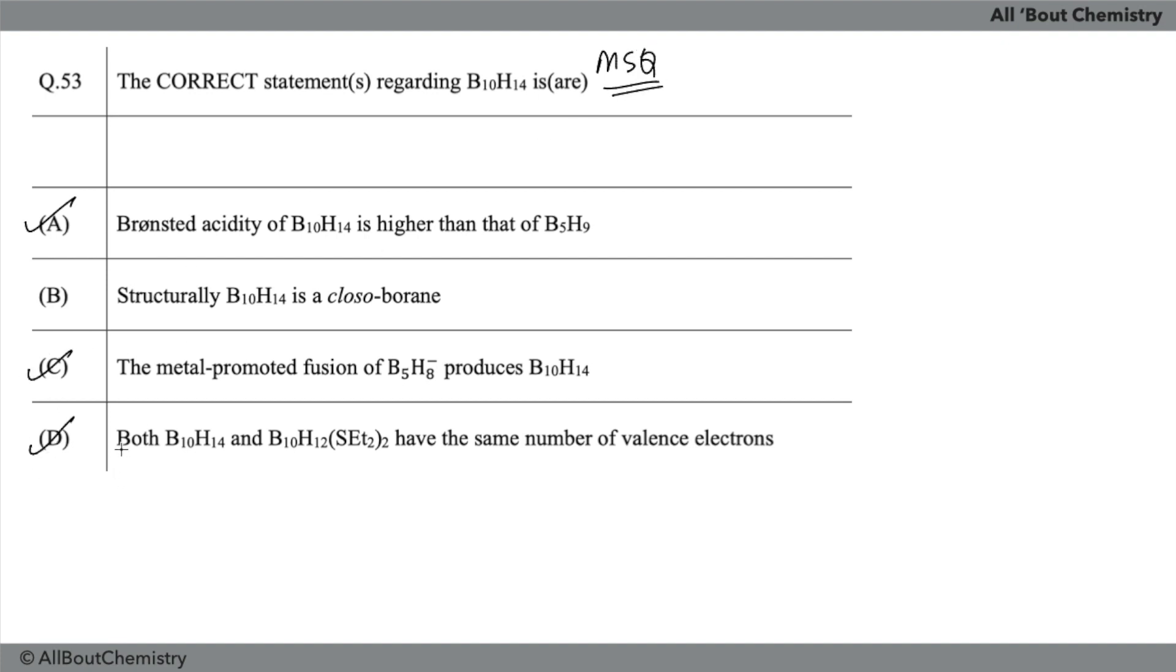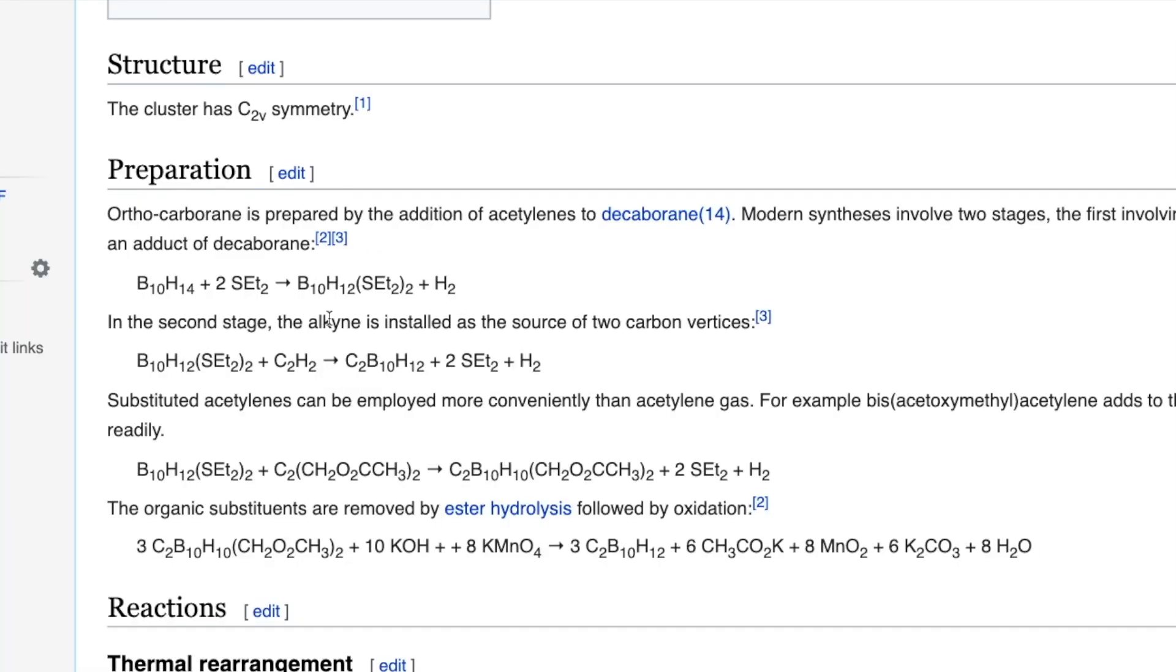Now there is a confusion for point number D. In the answer key, it's a MSQ question, a multiple selective type question, so A, C, and D are given as correct, and they have to be correct. If you look upon the reaction, this is an adduct actually which will be formed when you are reacting, in the formation of B10H12. I'll show you the reaction.